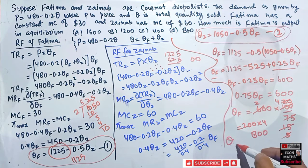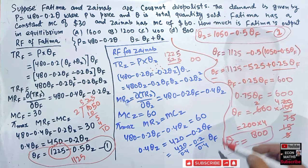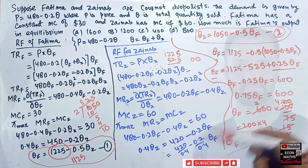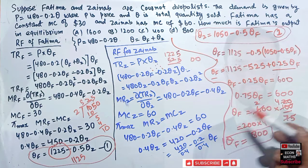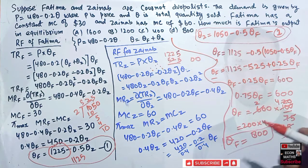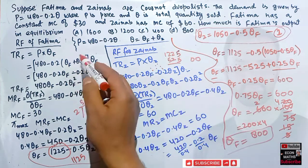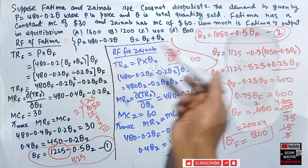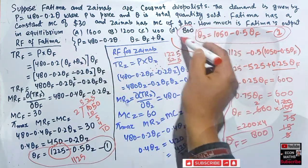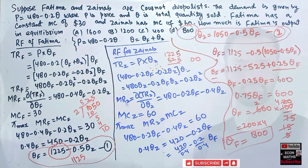So the quantity produced by Fatima in equilibrium is 800. The correct option is 800. Please check the calculation and let me know if there is any mistake. Thank you.